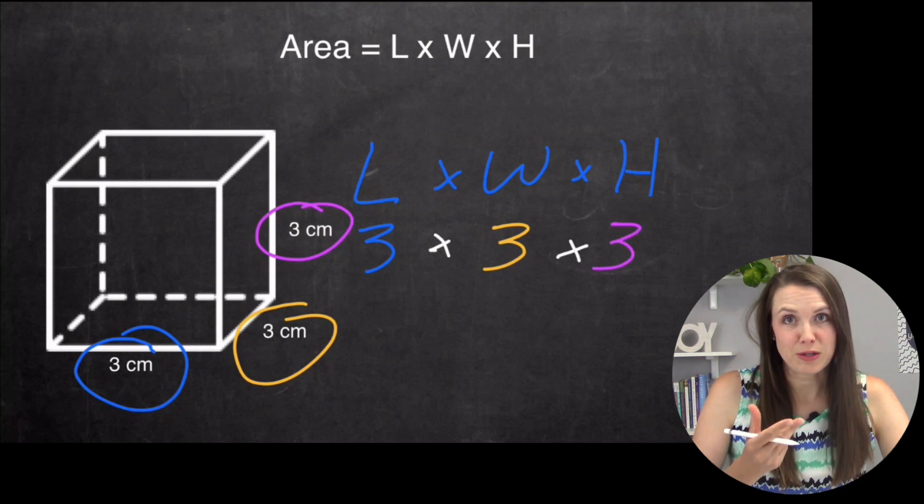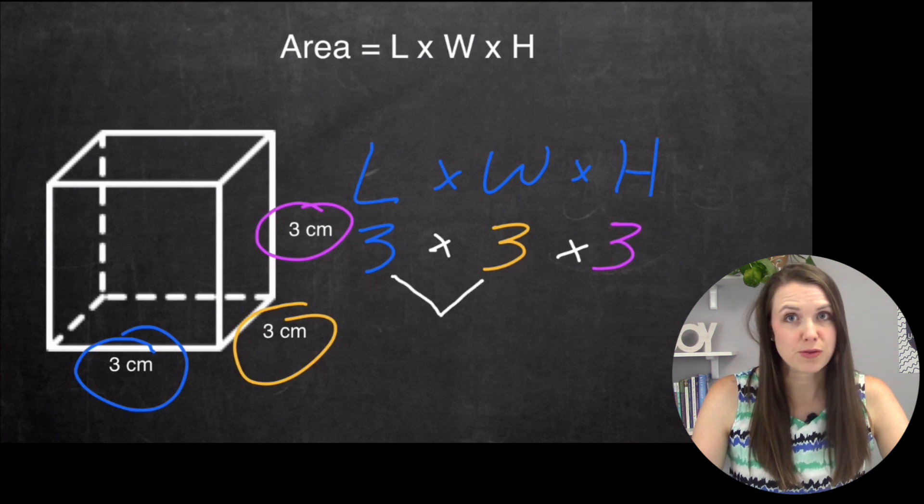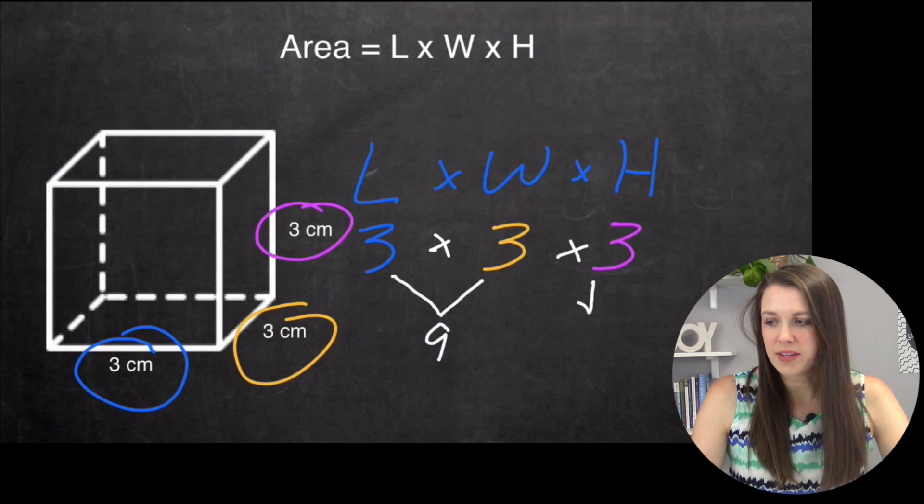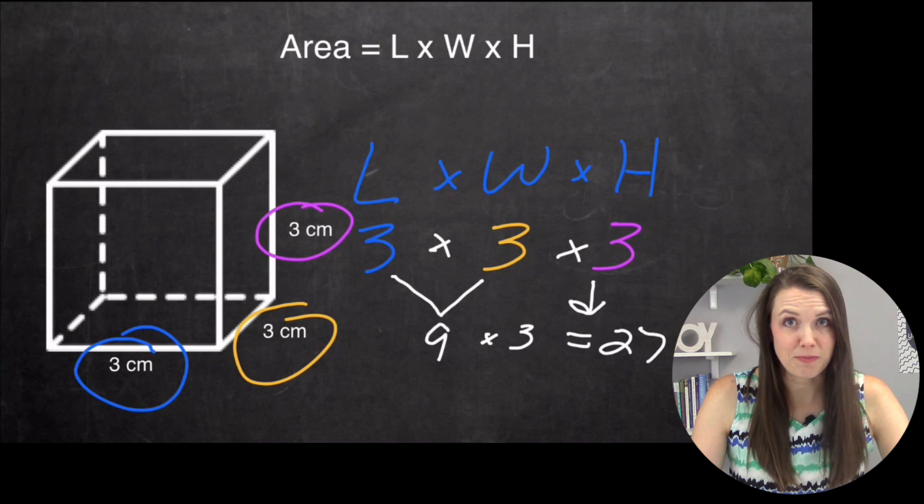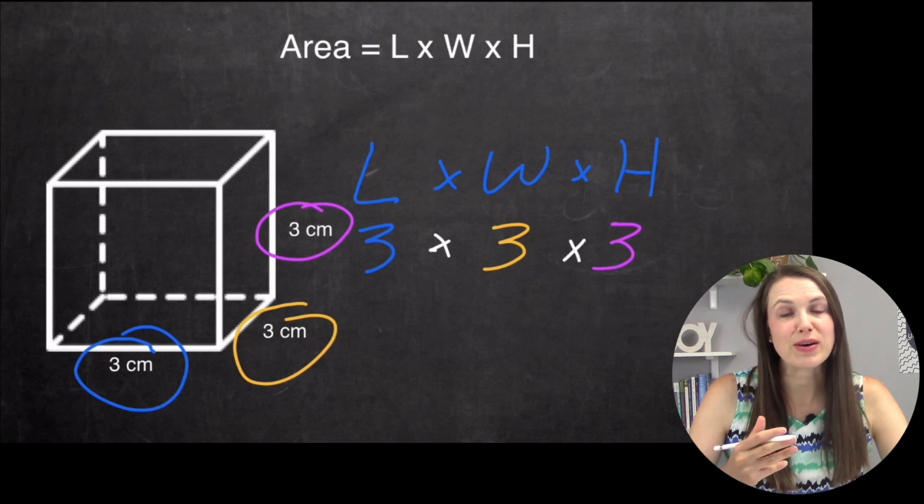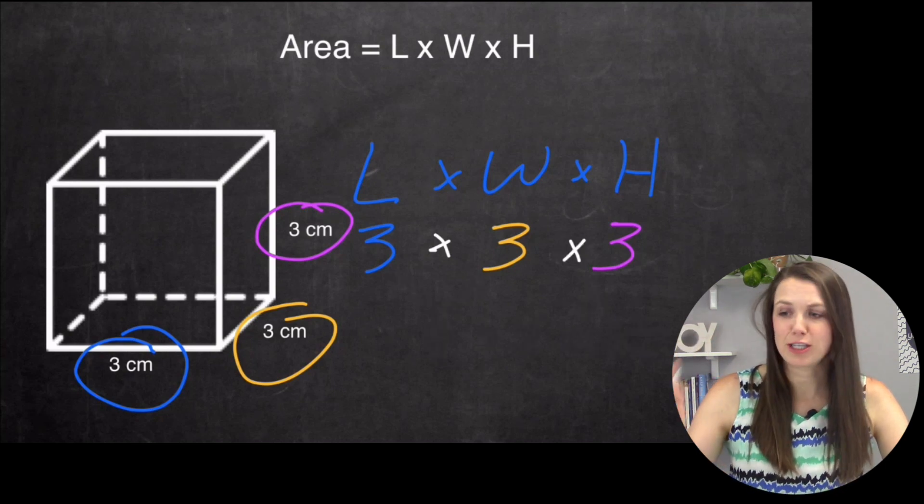There are a couple different ways to do this. The first way is I can just go three times three, which is nine, and then bring down this other three, and nine times three is 27. Another way I can do this is simply saying three cubed.